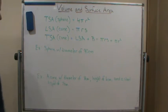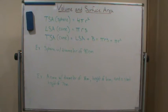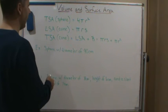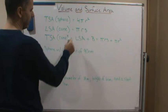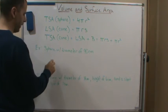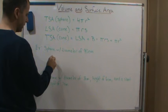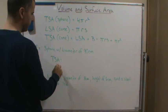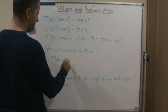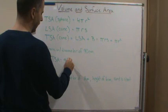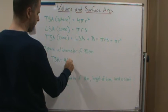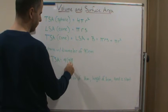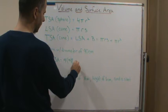Let's do a couple of examples. The first one: we want to find the surface area of a sphere that has a 90 centimeter diameter. Now, this formula uses radius, so the radius is 45 centimeters. So the total surface area of the sphere is going to be four times pi times 45 squared.